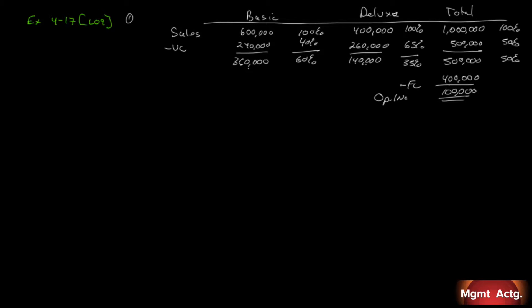Number two: compute the overall break-even point in dollars for the company based on the current sales mix. Since it's in dollars, the formula is fixed costs divided by the contribution margin ratio. Our fixed costs are $400,000 and the overall contribution margin ratio is 0.50, so we need $800,000 in sales at the organizational level given this mix.